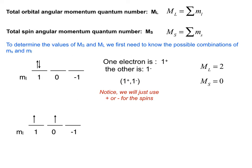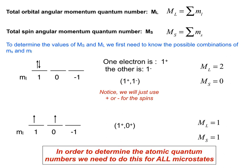In the second case, the electrons are in two different m_l orbitals and both are spin-up — written as (1+, 0+). Here M_L = 1 and M_S = 1. We can see how these quantum numbers define the different microstates of the atom.